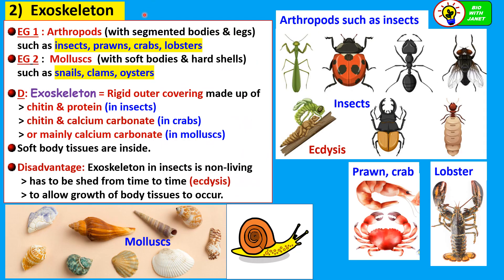The second type of skeleton is the exoskeleton — 'exo' means external. It is found in two types of organisms. First, the arthropods, which have segmented bodies and legs, such as ants whose bodies are divided into head, thorax, and abdomen. Arthropods include insects and crustaceans such as prawns, crabs, and lobsters. All these have an outer covering called the exoskeleton.